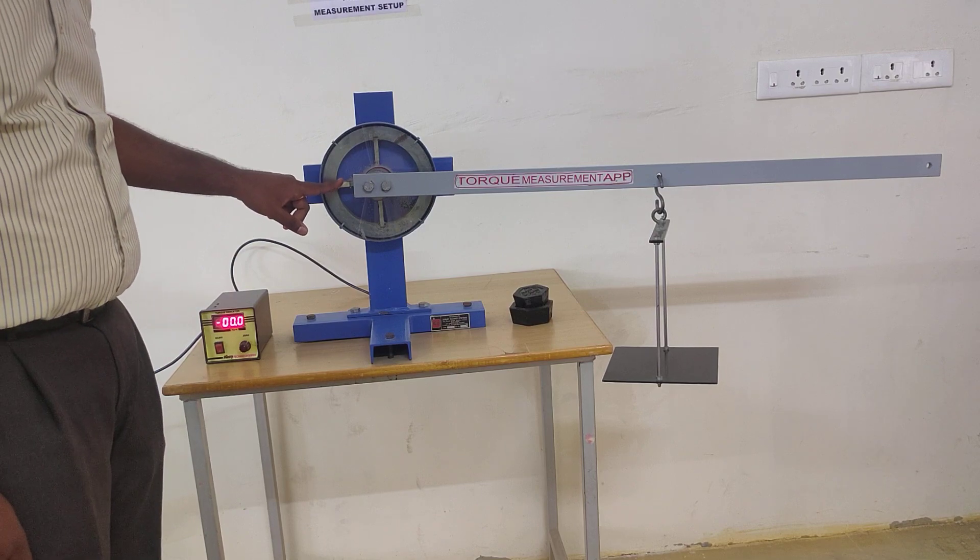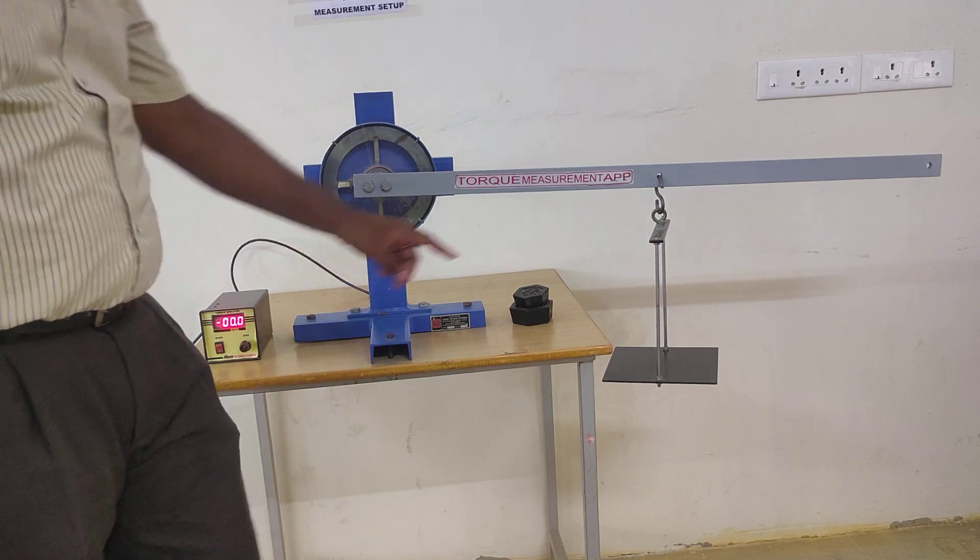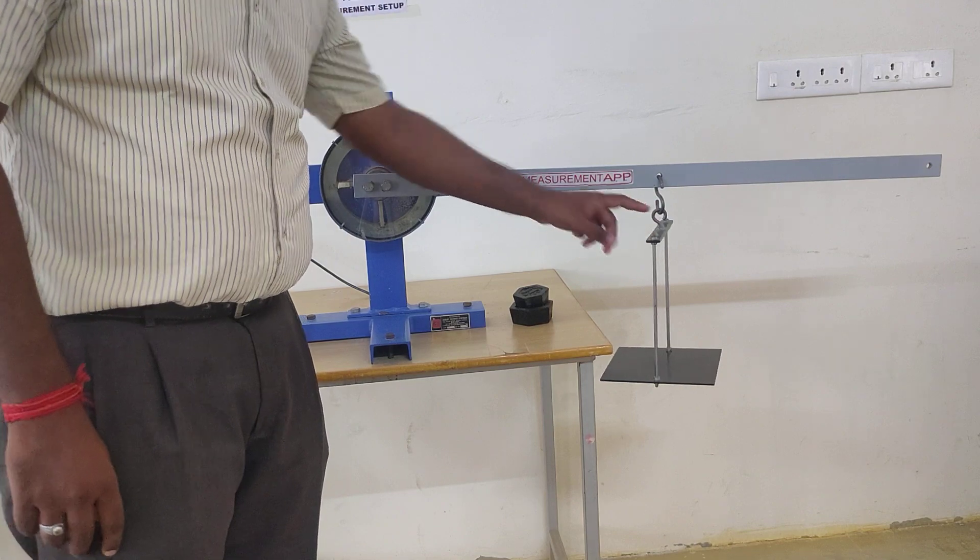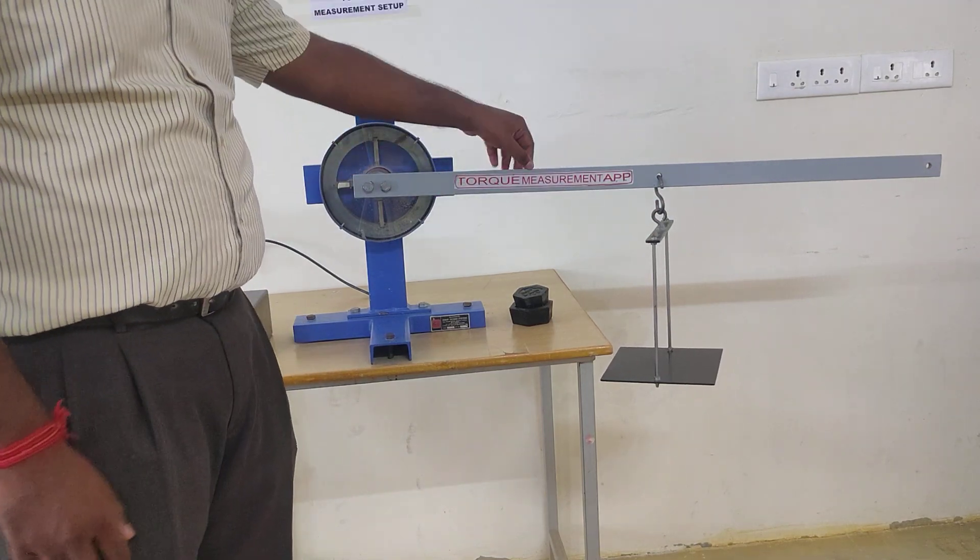This is a torque machine sensor which is available in this beam. When we load the weight in this hanger, the total leverage length is 1 meter.